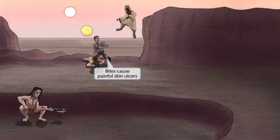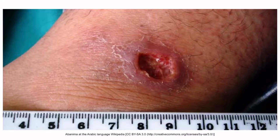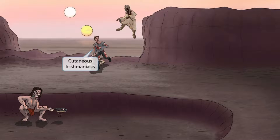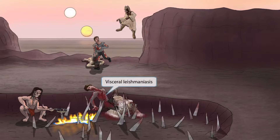These bites are painful, leading to skin ulcers. Here's a picture of an ulcer created by a sand fly bite — this is a painful bite, as you can probably tell by looking at this picture. These painful ulcers are termed cutaneous leishmaniasis. You can tell this man is covered in skin wounds, so you should be able to remember that this man has cutaneous leishmaniasis.